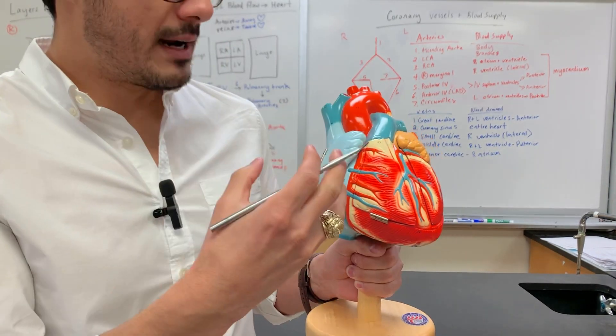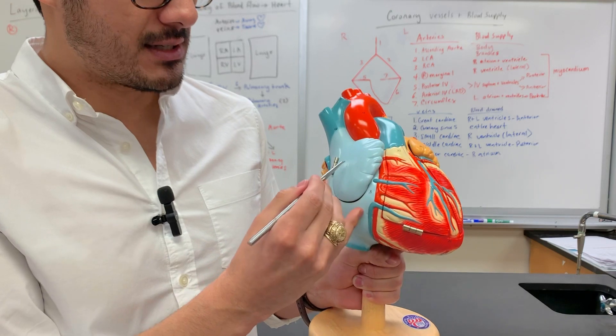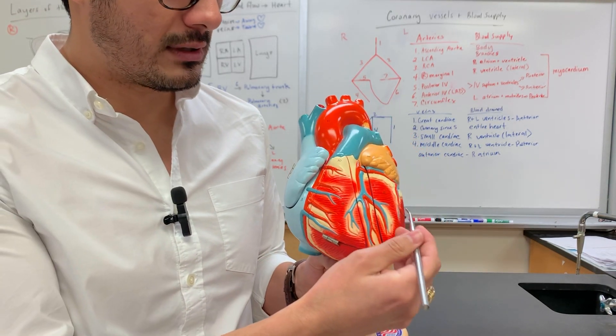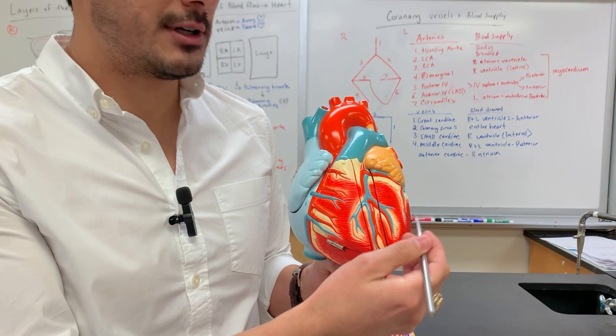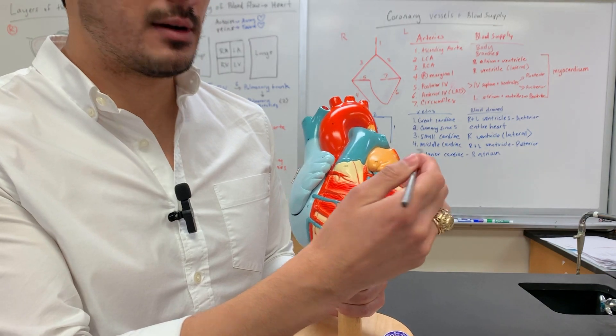The heart has different chambers. This is the right atrium, the right ventricle, left ventricle here, and left atrium up here.